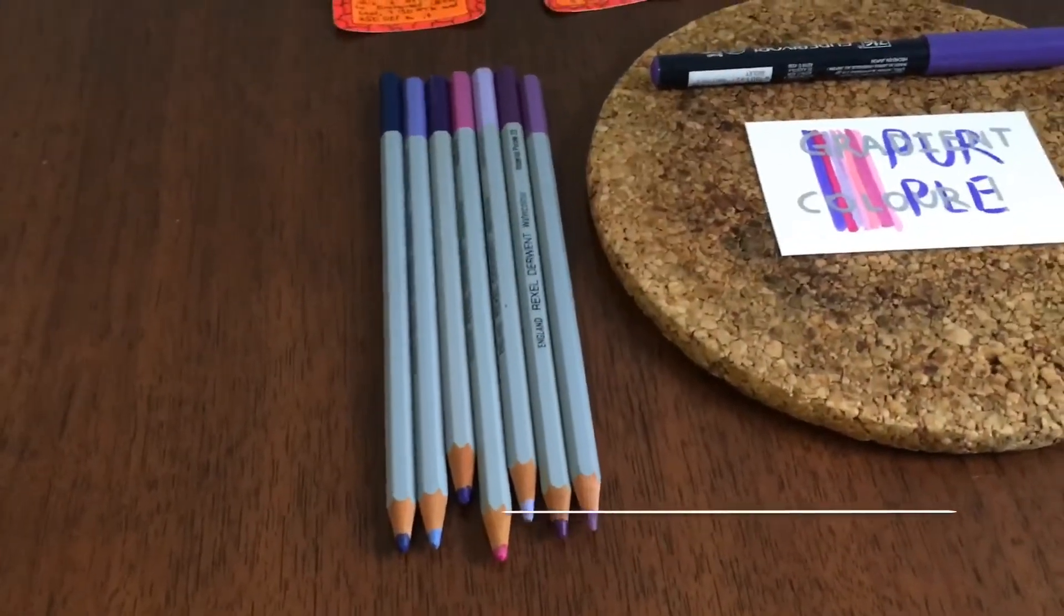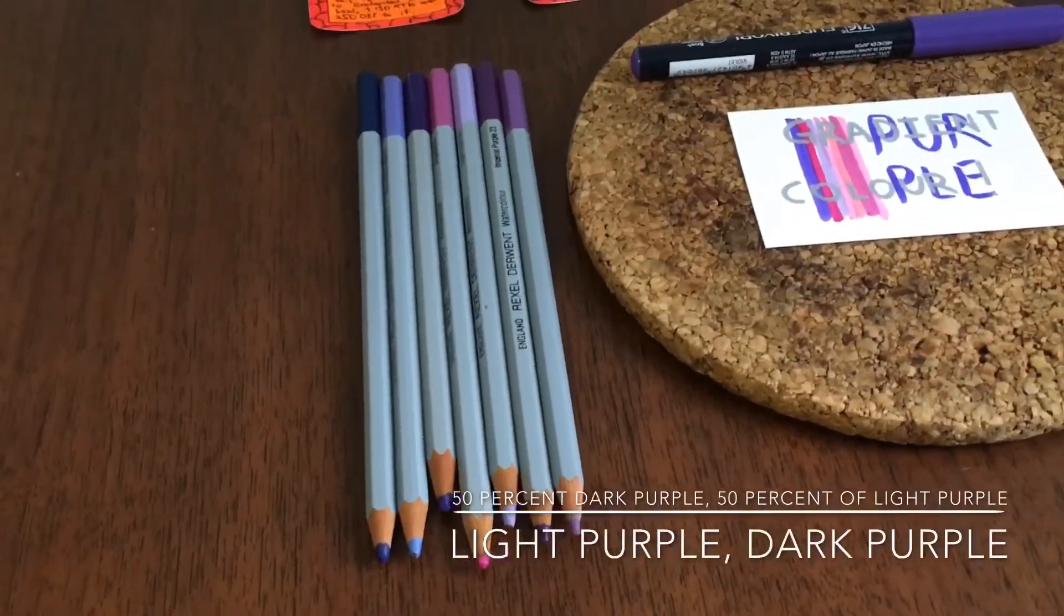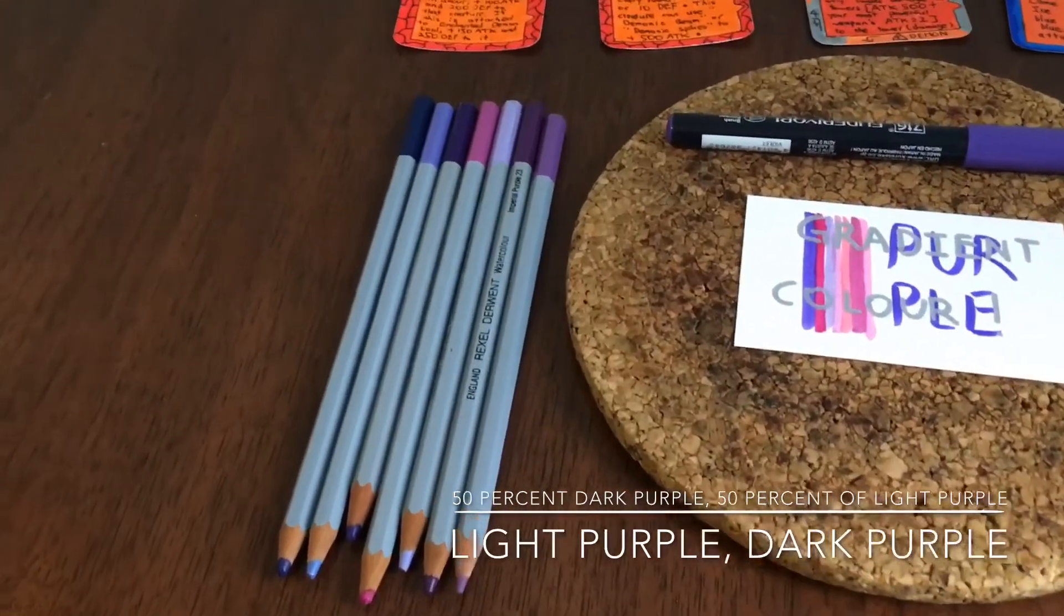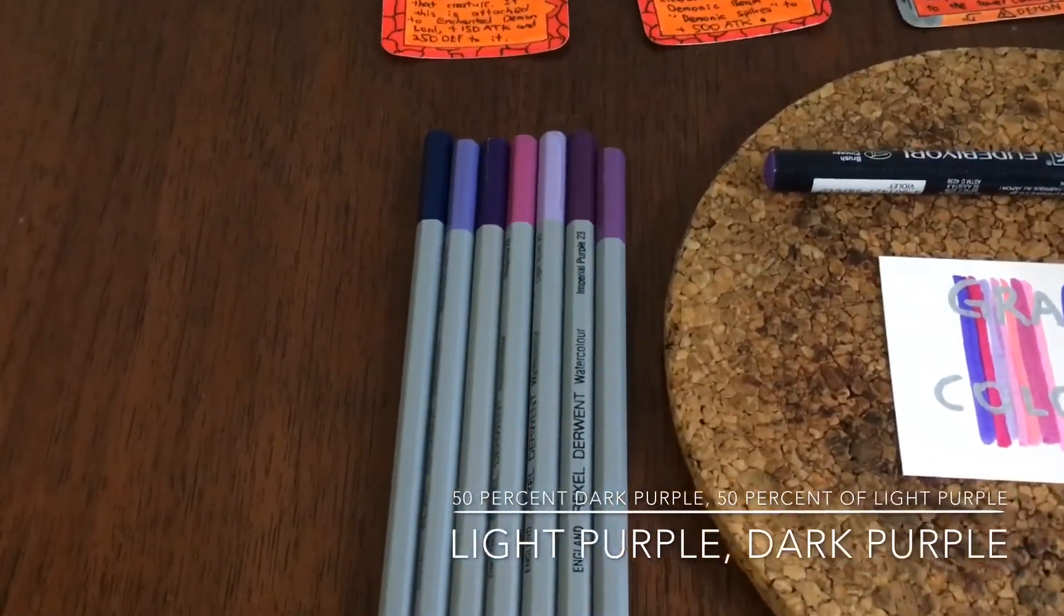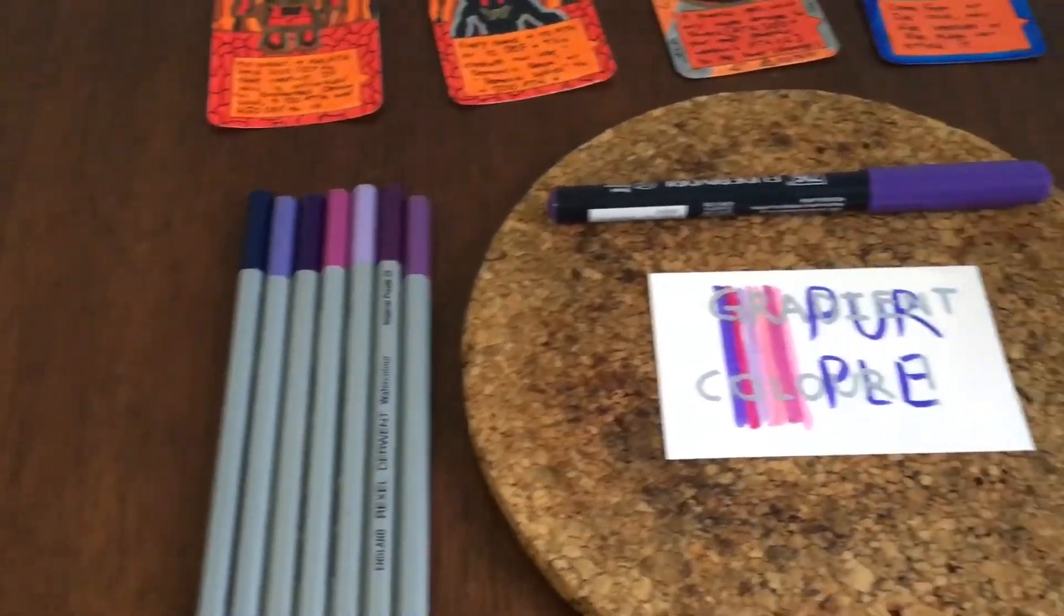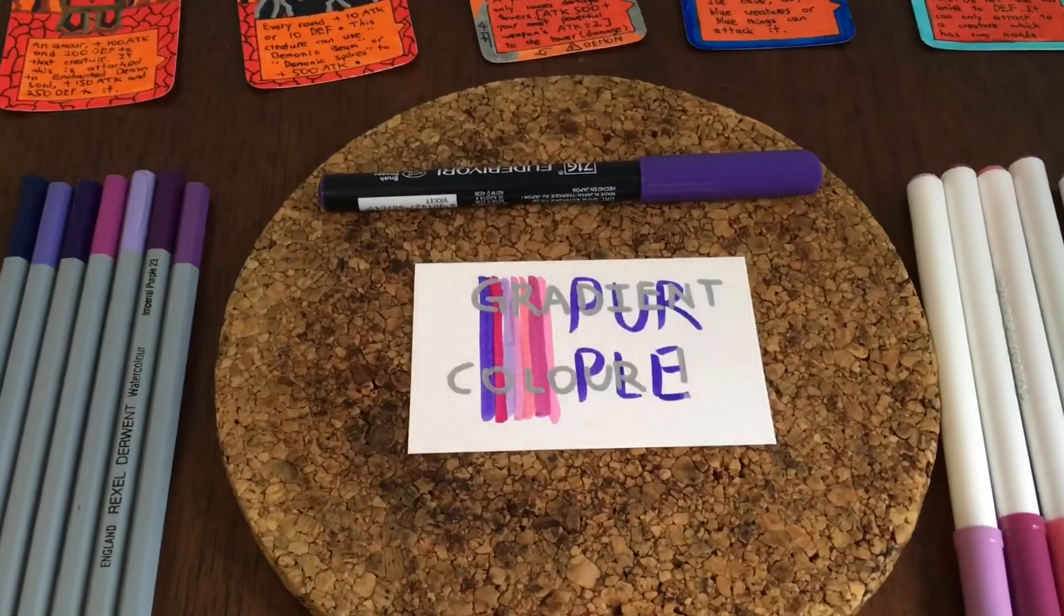These are the purple color pencils and you can see that they're similar to another colors. There's a lot of kinds of purple. See, light purple, pink, dark purple. And this is the brush for using the purple.